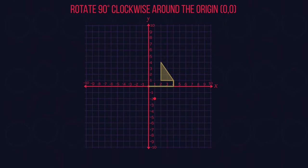So 4 along and 1 up becomes 1 along and 4 down. And 2 along and 4 up becomes 4 along and 2 down.